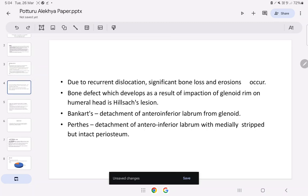Due to recurrent dislocation, significant bone loss and erosions occur. Bone defect which develops as a result of impaction of glenoid rim on humeral head is Hill-Sachs lesion. Bankart is detachment of anteroinferior labrum from glenoid.